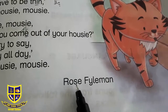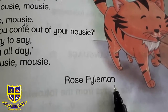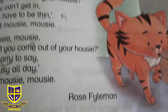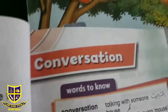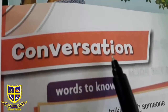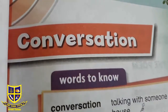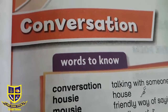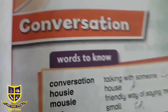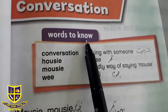The poem is written by the poetress Rose Fileman. Now we will start the reading of the poem with explanation. 'Conversation' — which is called a conversation between two people who are in the middle of the poem. Now we have some vocabulary — 'Words to Know' — to understand the words of the poem.